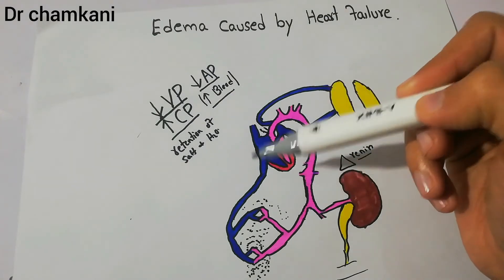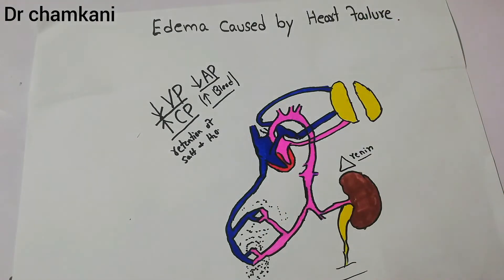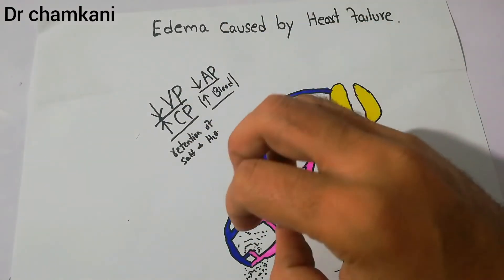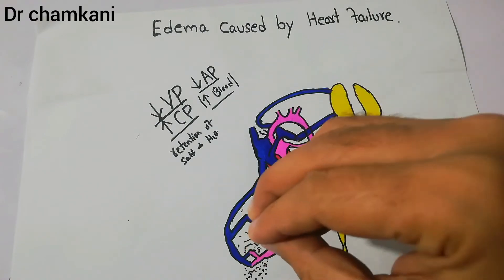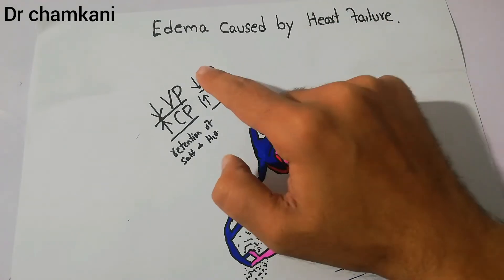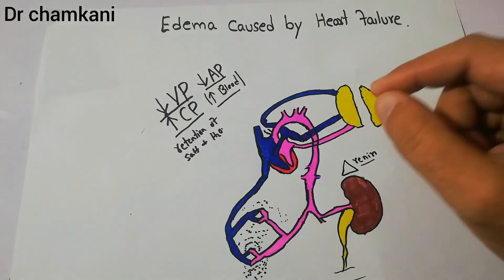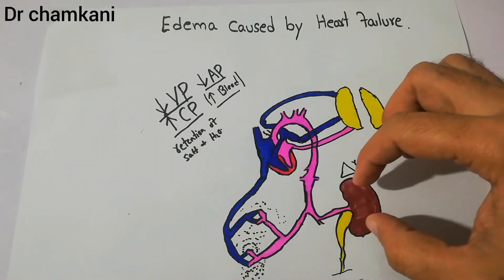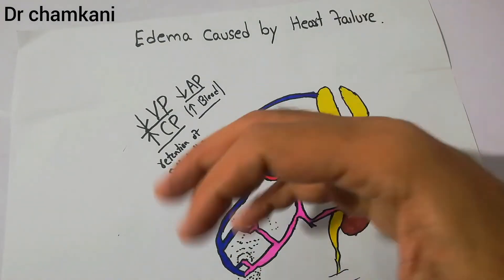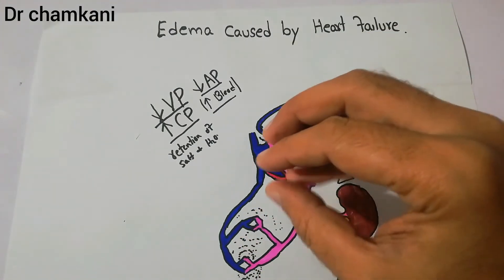So in heart failure, edema occurs due to the inability of the heart to pump blood from the venous side towards the arterial side. Blood pools in the veins — which are more compliant but less elastic — increasing venous pressure and capillary pressure, which increases filtration and causes edema. Additionally, the fall in arterial pressure reduces blood supply to the kidneys, triggering renin release and angiotensin formation, leading to salt and water retention, decreased urine formation, and further increases in blood volume and venous pressure.